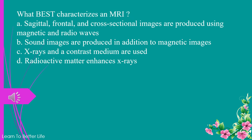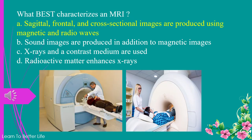What best characterizes an MRI? a. sagittal, frontal, and cross-sectional images are produced using magnetic and radio waves. b. sound images are produced in addition to magnetic images. c. x-rays and a contrast medium are used. d. radioactive matter enhances x-rays. The answer is a. sagittal, frontal, and cross-sectional images are produced using magnetic and radio waves.